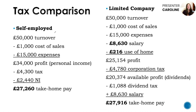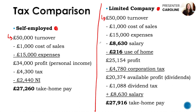Here's a tax comparison between the two setups. We've got self-employed on one side and a limited company on the other. With self-employed we've got £50,000 of turnover, and the limited company has the same. We take away cost of sales — all figures are exactly the same so far. Then we've got expenses: things like web hosting, travel costs, equipment, and the same amount applies to both sides.